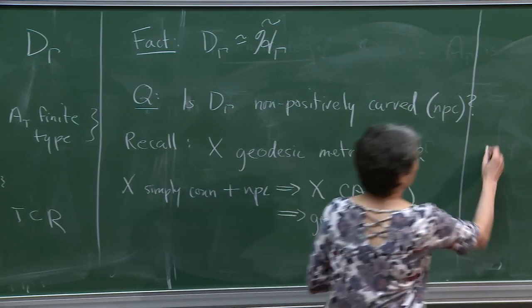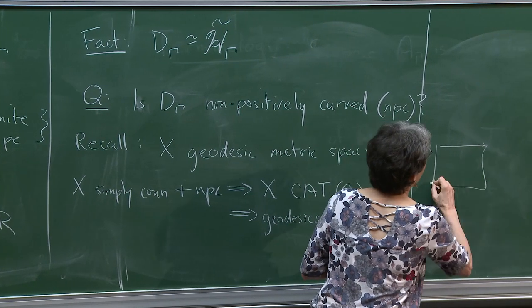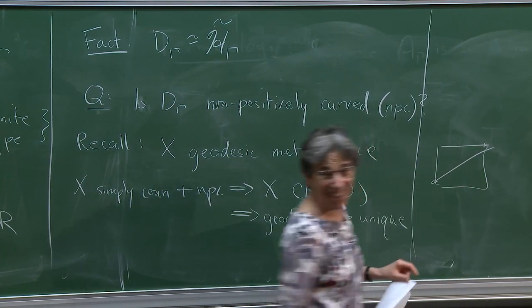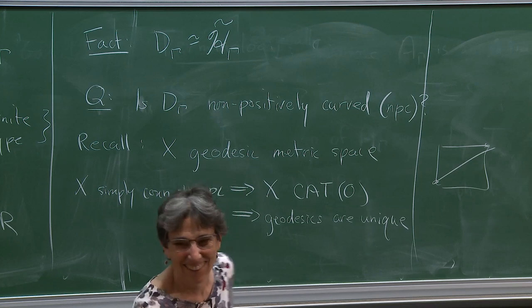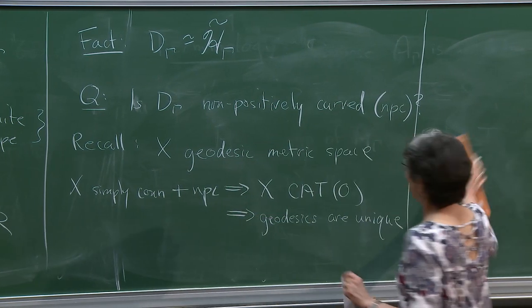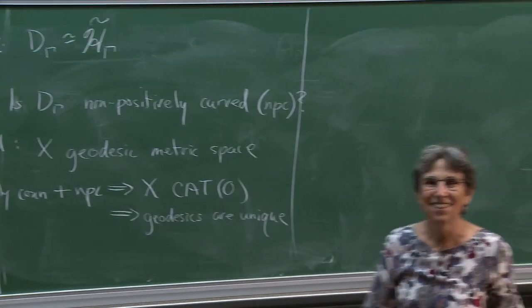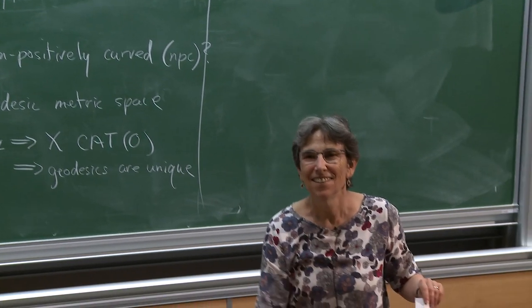So if I want to get from here to here, I go this way — I don't go around the outside. What is the definition of non-positively curved? Now it is a metric space, not a cube complex.